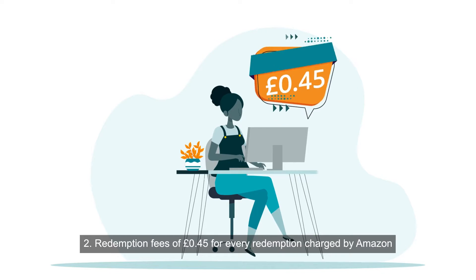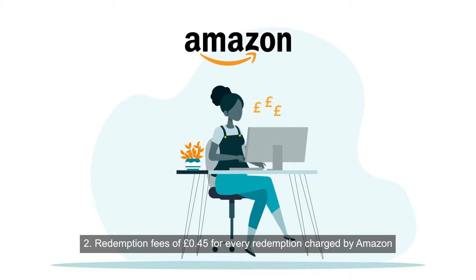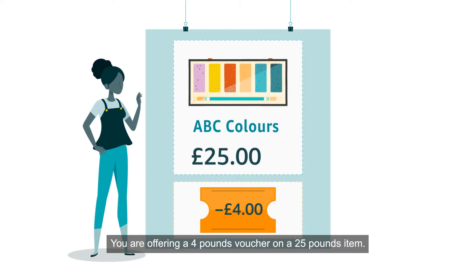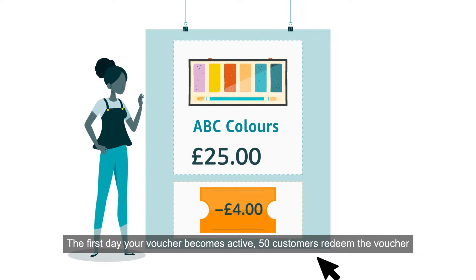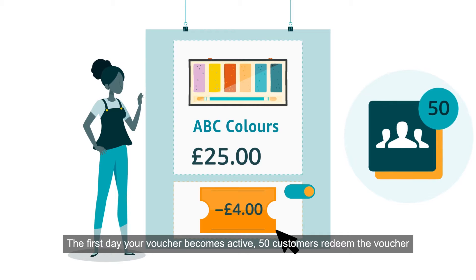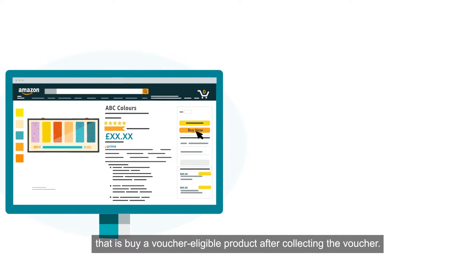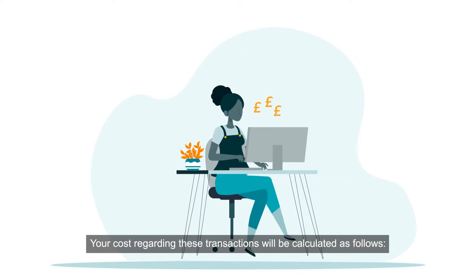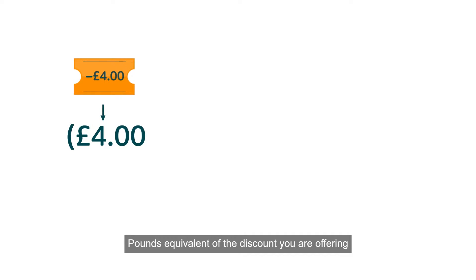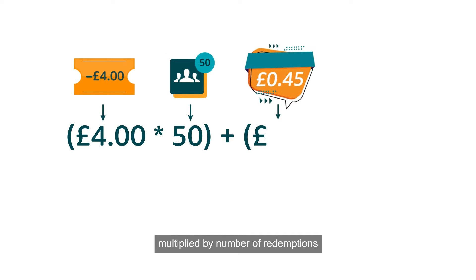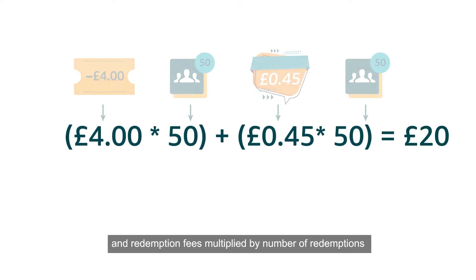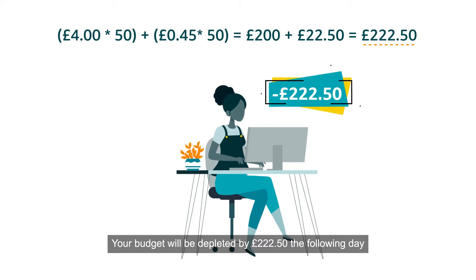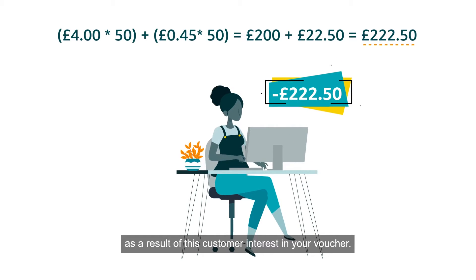Redemption fees of 45 pence for every redemption charged by Amazon. For example, if you are offering a £4 voucher on a £25 item and 50 customers redeem the voucher on the first day, your cost is calculated as: (discount amount × number of redemptions) + (redemption fee × number of redemptions). Your budget will be depleted by £222.50 the following day.